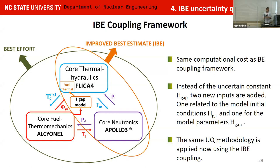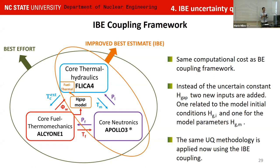Now let's introduce this model to our previous best estimate coupling and see what this brings. When we improve our model with this simplified calibrated model, we obtain the same computational cost as the best estimate coupling, because our model is just a function that is evaluated at each time step — negligible compared to the other codes. Instead of having one parameter — the gap heat transfer — as uncertain, we now have two parameters related to the initial conditions and the calibration parameters, giving 23 inputs in the uncertainty quantification.